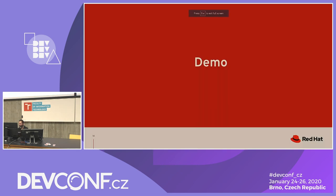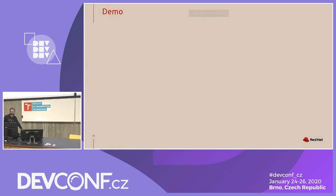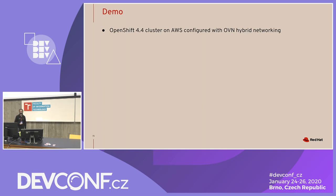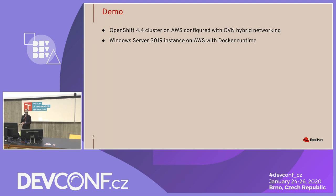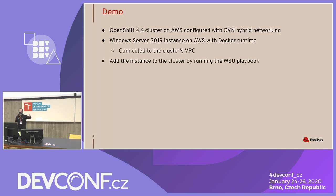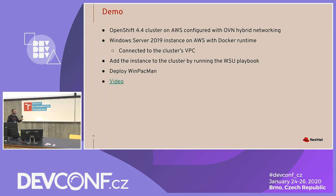Let me explain what I'm trying to show in the demo. I'm running on an OpenShift 4.4 cluster configured with OVN hybrid networking. I already have a Windows Server 2019 instance running on AWS — that's the host file I showed you — and that instance is connected to the cluster's VPC. In the background, that instance is being added to the cluster by running the WSU playbook. If it succeeds, we'll get to play some Pac-Man.